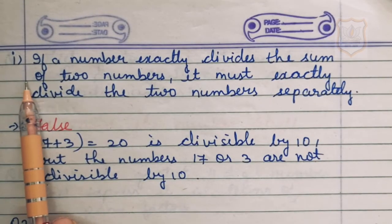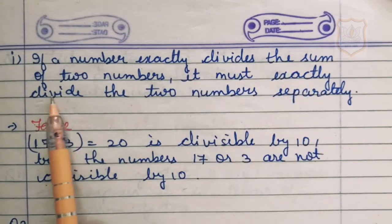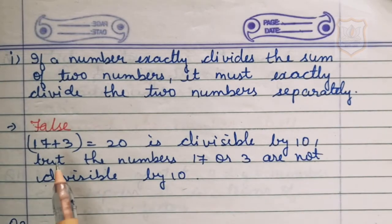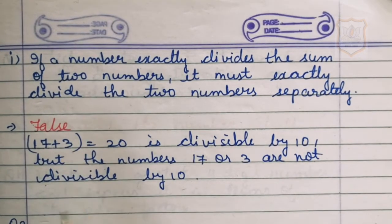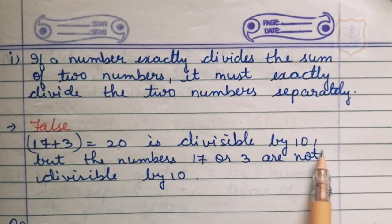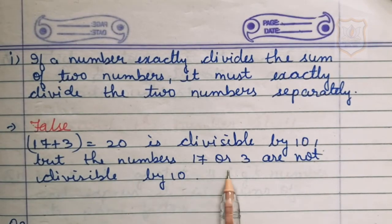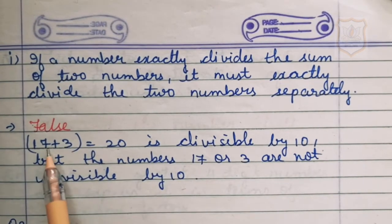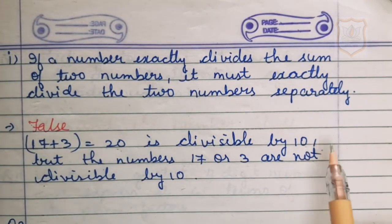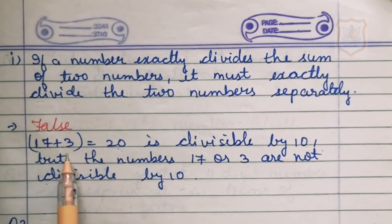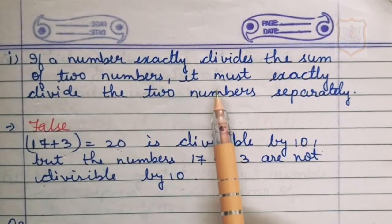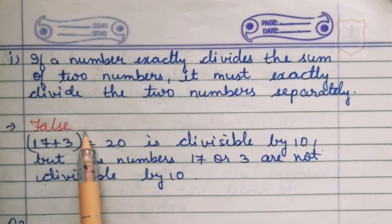Part I of question number 1: if a number exactly divides the sum of two numbers, it must exactly divide the two numbers separately. The statement is false. For example, 17 plus 3 is 20, and 20 is divisible by 10, but 17 and 3 are not individually divisible by 10. So the statement is false.